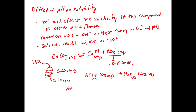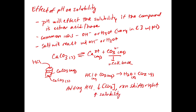Adding HCl will decrease the concentration of carbonate because it is reacting to make CO₂ gas. This is going to cause the reaction to shift to the right, giving us an increase in solubility. As the carbonate gets used up, the calcium carbonate will dissolve more to make more carbonate in solution, so the whole equilibrium shifts to the right. This is what we're getting at with the effect of pH on solubility.